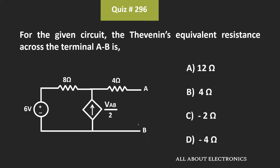If you see this circuit, it contains both an independent as well as a dependent source. To find the Thevenin's equivalent resistance, first we will find the Thevenin's equivalent voltage across the two terminals, then we will short these two terminals and find the short circuit current. The ratio of Thevenin's equivalent voltage to short circuit current will give us the Thevenin's equivalent resistance.